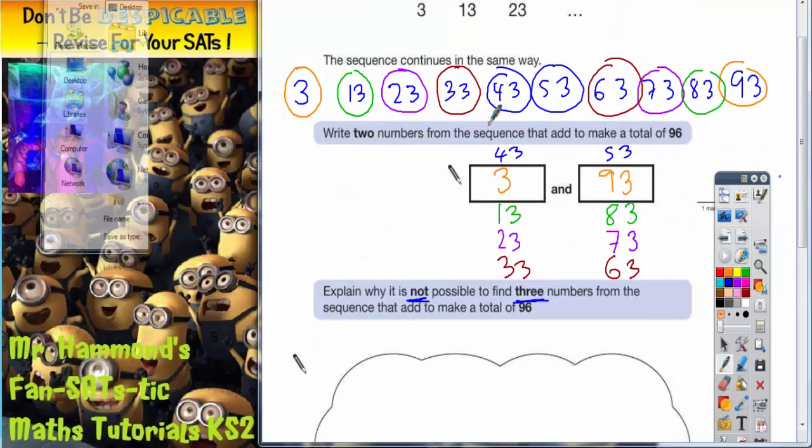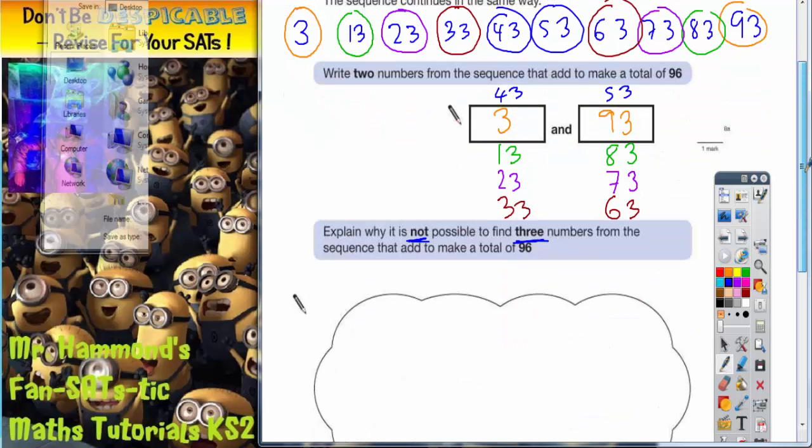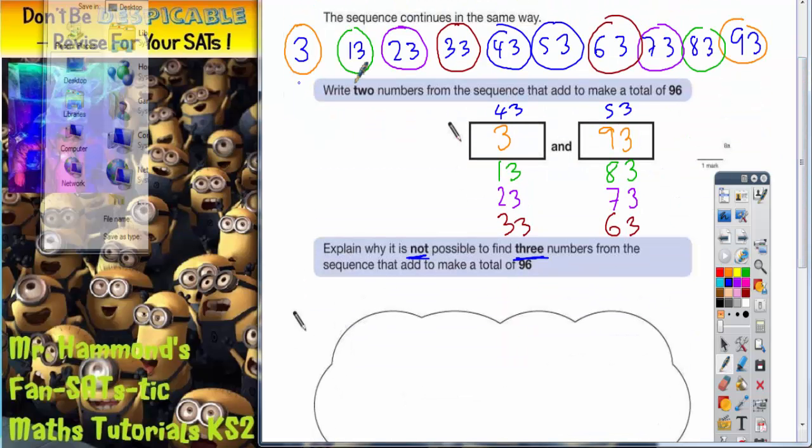Well, that one's quite easy to explain. You can see that every single number has a unit's digit of 3. Unit's digit 3, unit's digit 3, unit's digit 3, and so on.